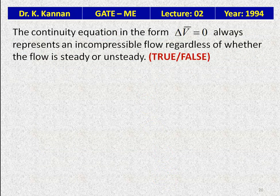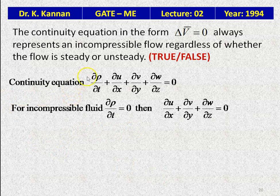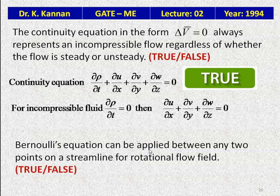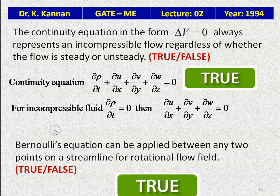The continuity equation del·V⃗ = 0 always represents incompressible flow regardless of whether the flow is steady or unsteady — this is true. The full continuity equation is ∂ρ/∂t + ∂u/∂x + ∂v/∂y + ∂w/∂z = 0; for incompressible flow ∂ρ/∂t = 0, reducing to del·V⃗ = 0. Also, Bernoulli's equation can be applied between any two points on a streamline for rotational flow — true.